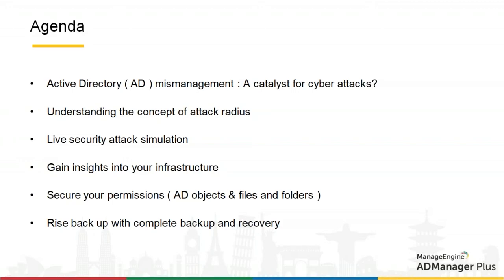In the second part of today's webinar, we'll deep dive into the concept of attack radius and see how the cycle works. In the third part, I will be showing a live security attack simulation — just to prove that a single mismanagement vulnerability is all it takes for an attacker to gain access to your internal network. To overcome mismanagement vulnerabilities, we will employ a three-step approach: first gaining insights into our infrastructure, then fixing vulnerabilities, and then securing permissions on Active Directory objects and files and folders.